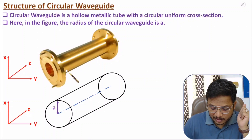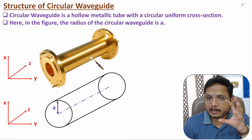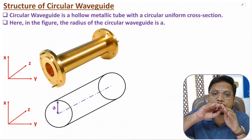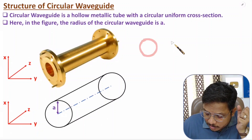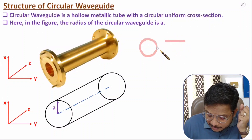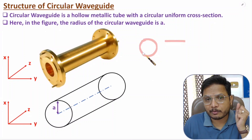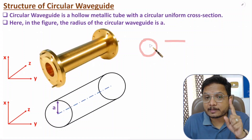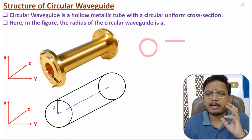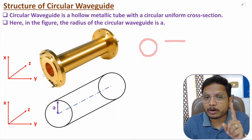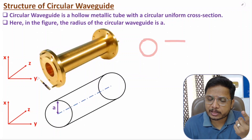That is the simple structure of circular waveguide. One more thing regarding structure: since the waveguide has a circular shape, metal is bent to form the circle, which causes tapering issues. Because of these tapering issues, dispersion will be higher with circular waveguide, leading to more attenuation compared to rectangular waveguide.